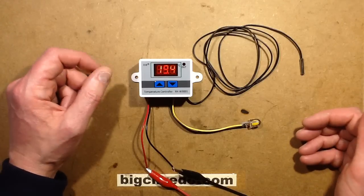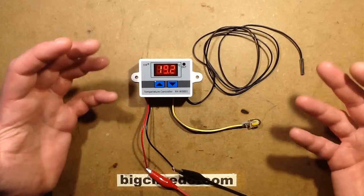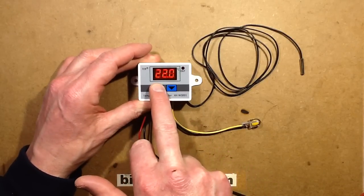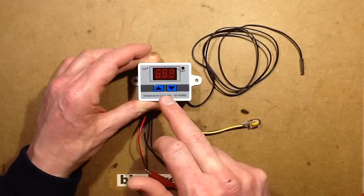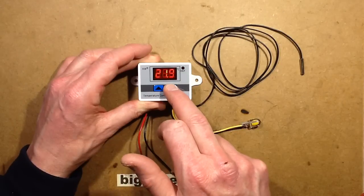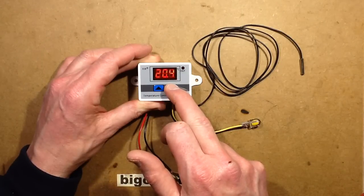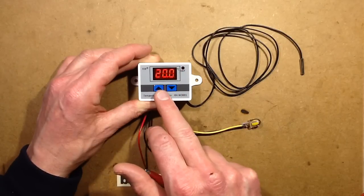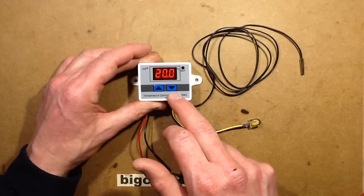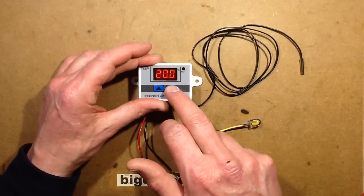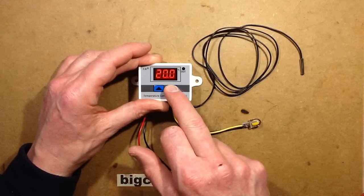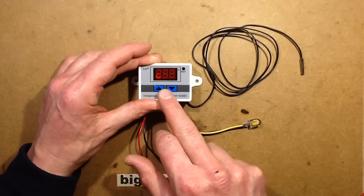So now supposing you wanted to make it heat instead of cool. All you do is you'd select that one and say you wanted to come on at 20, and then you wanted it to go off at 22.